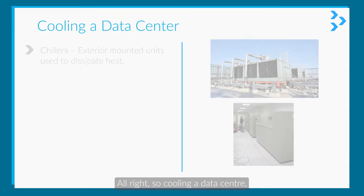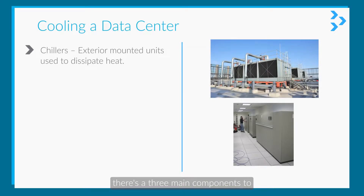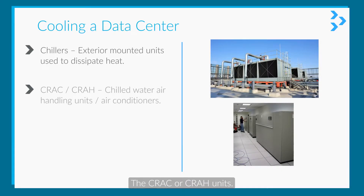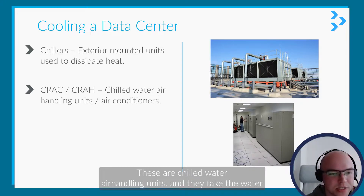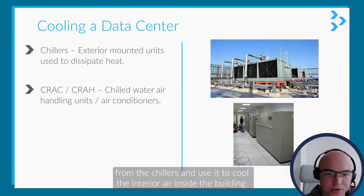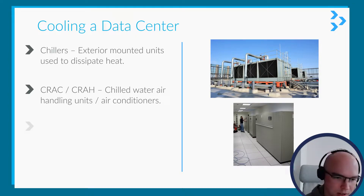So, cooling a data center. There are three main components to this. There are the chillers, which are exterior-mounted units used to dissipate the heat. The CRAC or CRAH units — these are chilled water air handling units — and they take the water from the chillers and use it to cool the interior air inside the building.